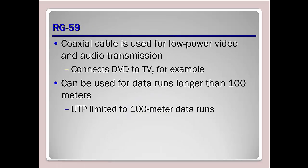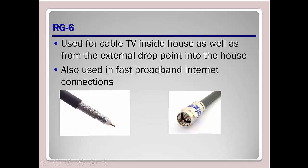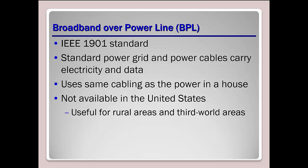RG59 coaxial cable is used for low power video — this is what we'd connect for old connections before HDMI became standard, like connecting a video camera to a production system. RG6 is for thick net — the cable coming into the house and sometimes throughout the house, used for fast broadband internet connections. That's the idea that broadband doesn't have to replace all the cables to make things run faster.